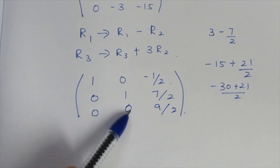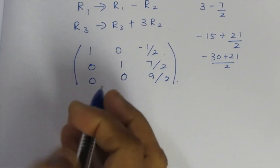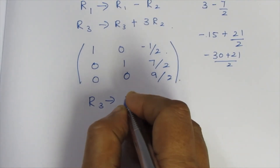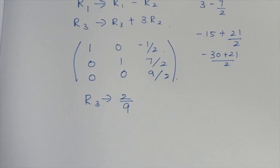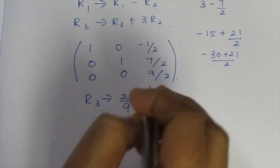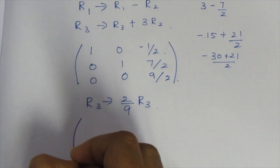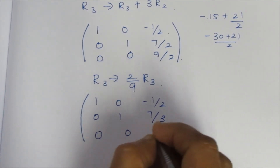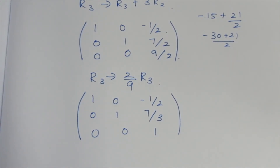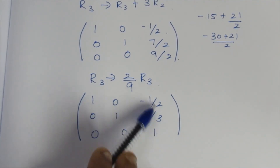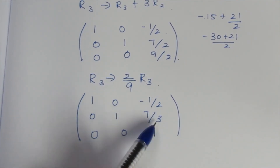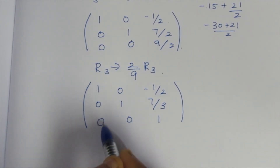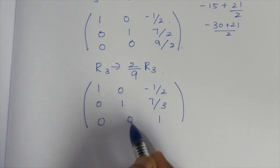Now we have 1 in the pivot position. Now we have zeros. We use 2 by 9 as a reciprocal and multiply to get 1 in each diagonal. Now we have 1, now we have 0, now we have 0. If we solve, we achieve zeros in all off-diagonal positions.